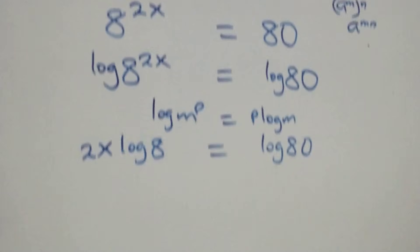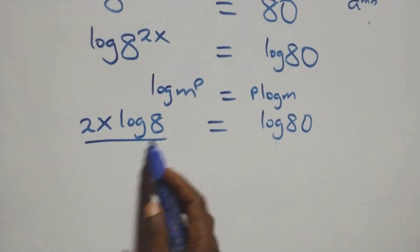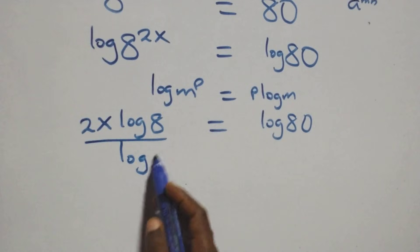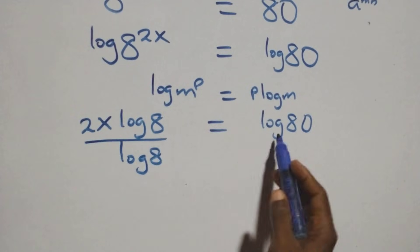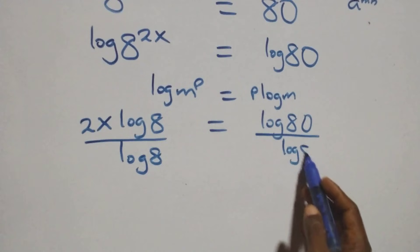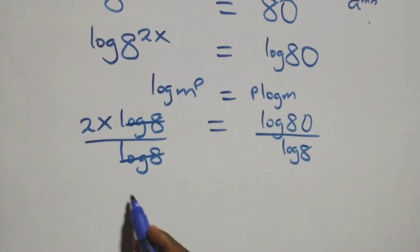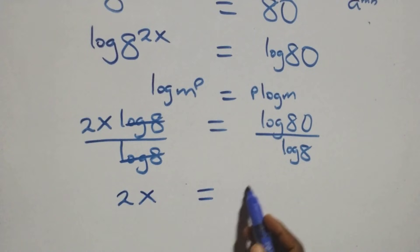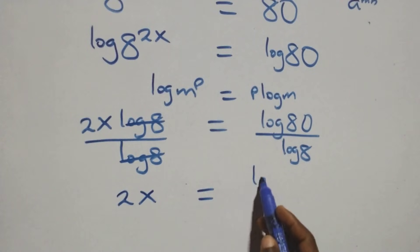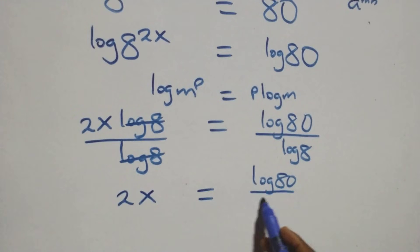The next step here: divide both sides by log 8. That is, divide this side by log 8, and also divide this side by log 8. Here, log 8 cancels each other, and we have 2x equals log 80 over log 8.